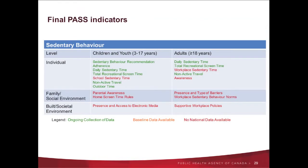For sedentary behaviour, the agency has followed the same structure as physical activity. In addition to focusing on total daily sedentary time, indicators were also included to describe the type of sedentary behaviour: sedentary time at school and work, time sitting in a vehicle, and recreational screen time. Risk and protective indicators illustrating factors influencing sitting behaviour include time spent outdoors, awareness, parenting practices in the home, presence and access to electronic media, and workplace norms and policies. Presently the agency reports on individual sedentary time and type, but through PASS we would like to develop measures to collect data on the various upstream determinants of sedentary behaviour.